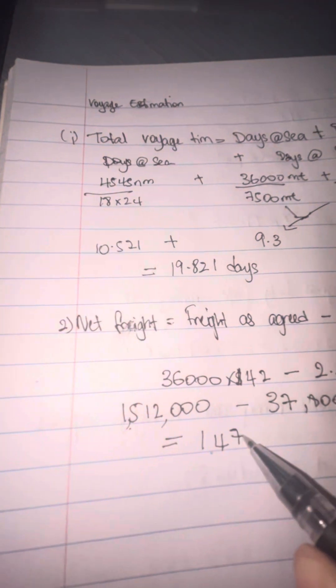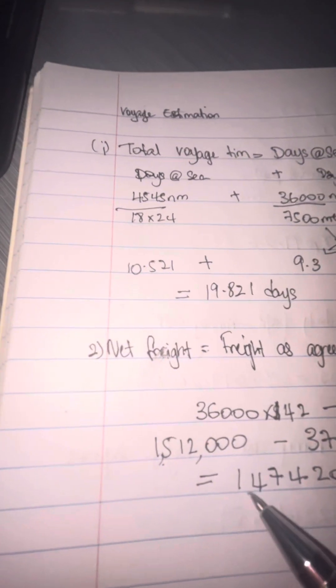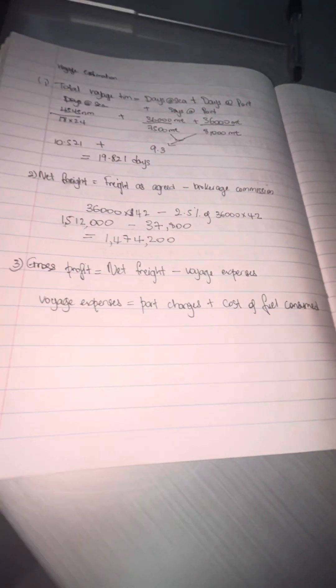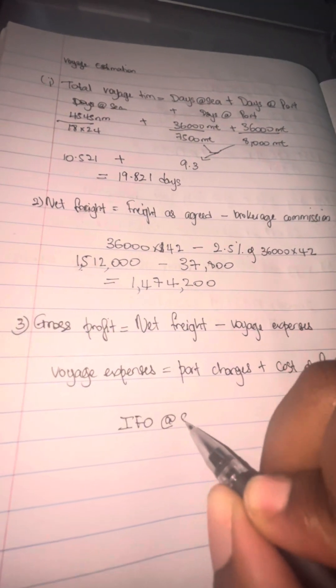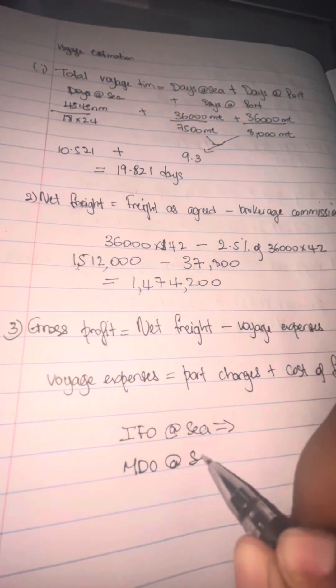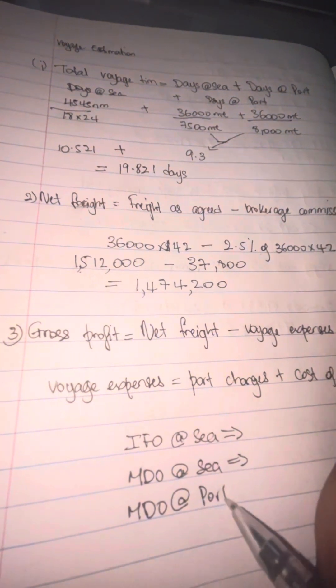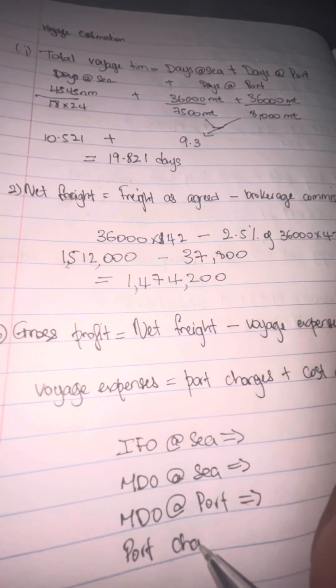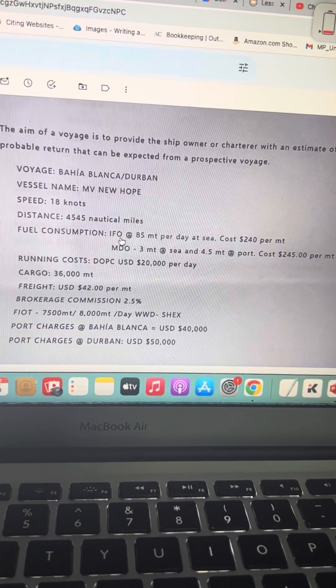I want you to pay keen attention—net freight, freight is money. Now we're moving on to gross profit. Profit is money. Gross profit is your net freight minus voyage expenses. You're going to need to get your voyage expenses first. To get that, you do your port charges plus your cost of fuel.